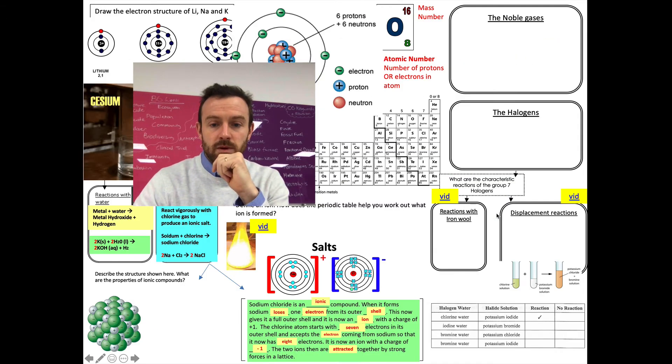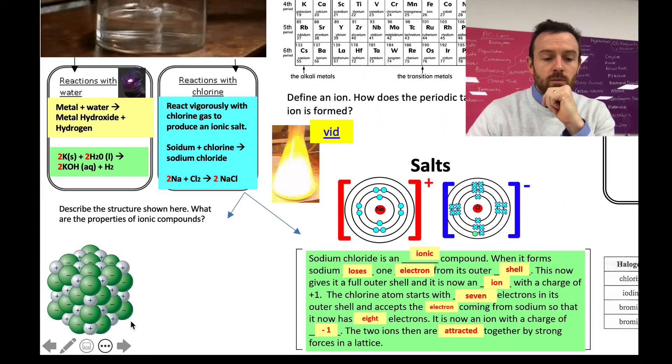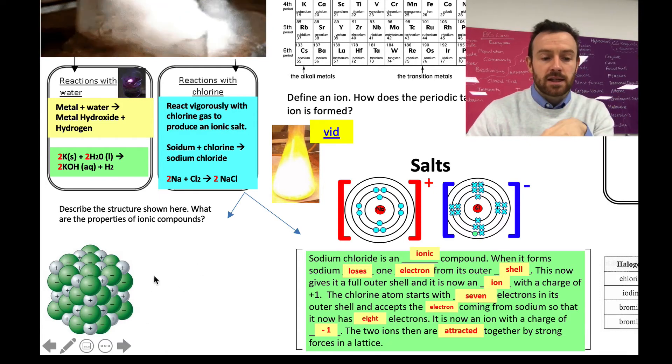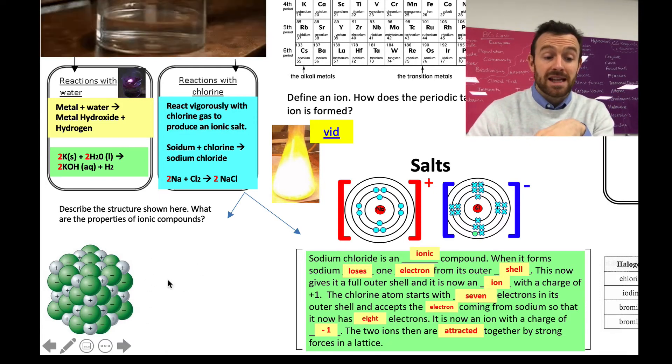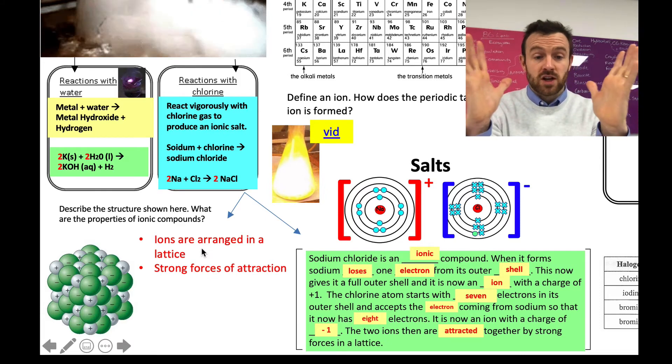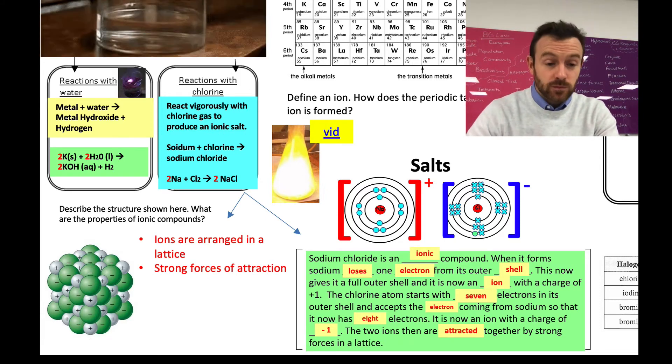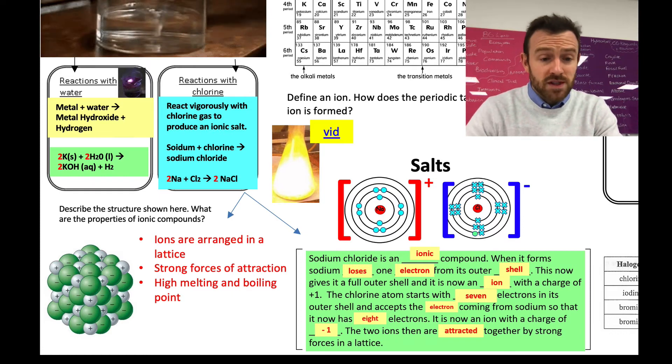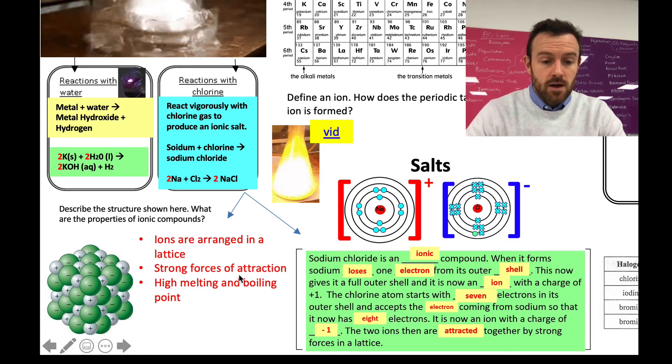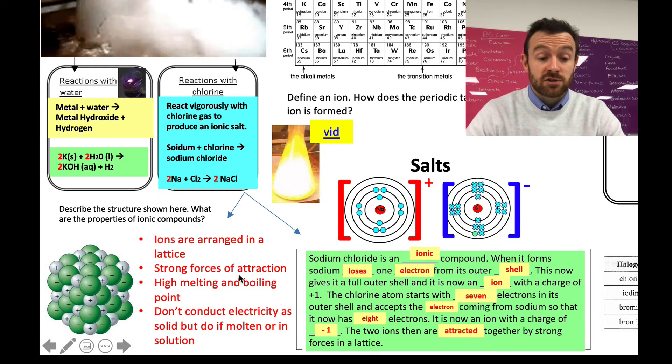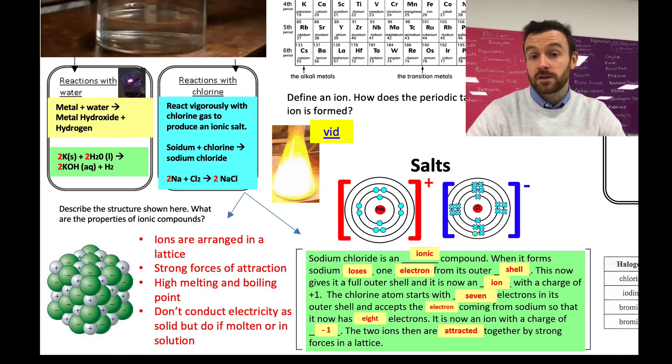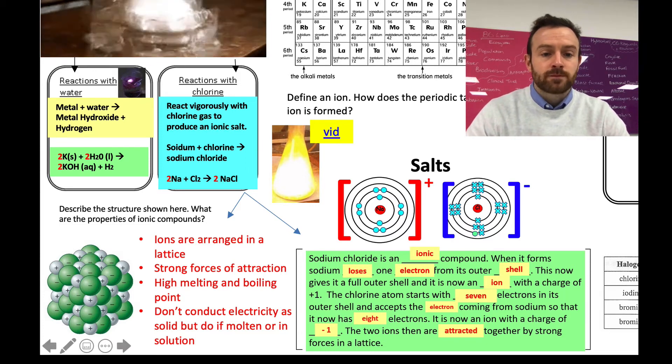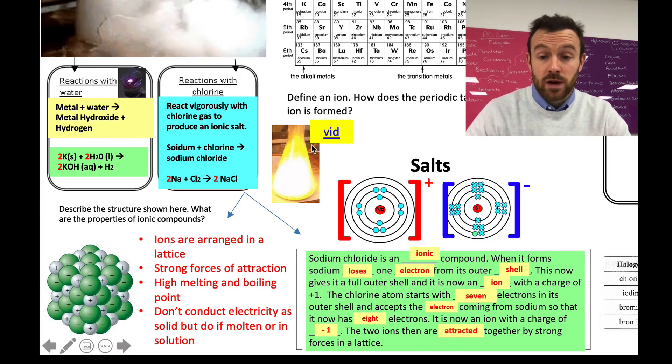So what can we say are the key points, looking down here, about the properties of ionic compounds because of this lattice? Well, first of all, ions are arranged in the lattice. There's very strong forces of attraction between all the ions. They have high melting and boiling points. And they don't conduct electricity as a solid, but they do if they're molten or if they're in solution. Okay? So, so far, we've covered group one and their reactions with chlorine gas.